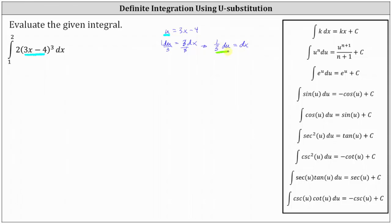Now we can substitute one-third du for dx and factor out the 2. You need to be careful here, though. The limits of integration from 1 to 2 are x-values, not u-values. So right now we'll leave off the limits of integration, factor out the 2, and note that dx equals one-third du, which we also factor out. The integrand function becomes u to the third.